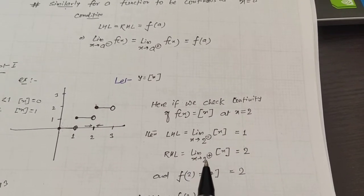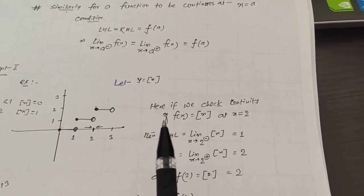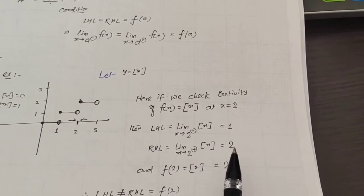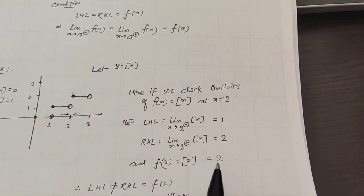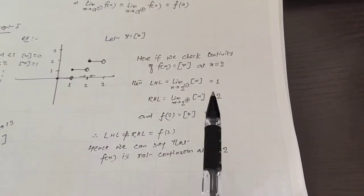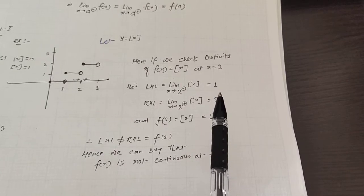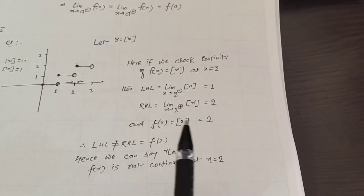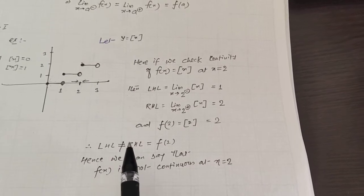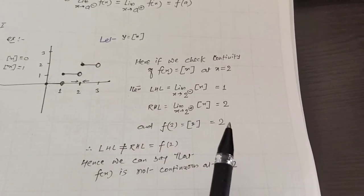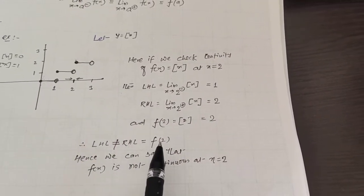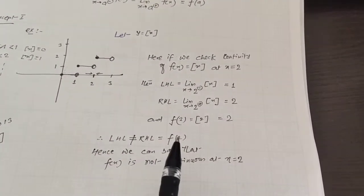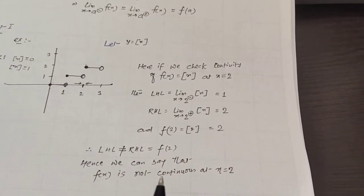The right-hand limit means limit x tends to 2 plus — something greater than 2, like 2.00001. The greatest integer value of 2.00001 is 2. And f(2) means the greatest integer of 2, which is also 2. So clearly, the left-hand limit is 1, the right-hand limit is 2, and f(2) is 2. Since left-hand limit is not equal to right-hand limit (1 ≠ 2), the condition left-hand = right-hand = f(2) fails. Therefore the function is not continuous at x equals to 2.